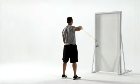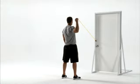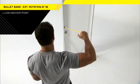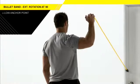To safeguard your shoulder, use the bullet band in an external rotation exercise at 90 degrees. Attach the bullet band to a low anchor point and stand tall facing the anchor.